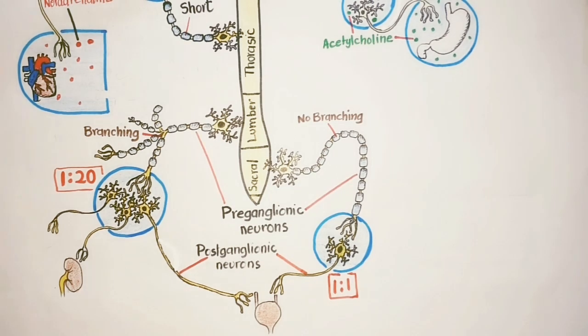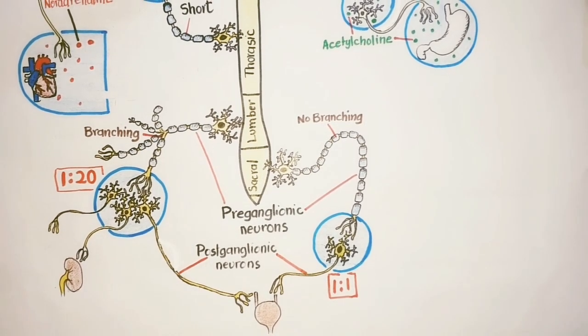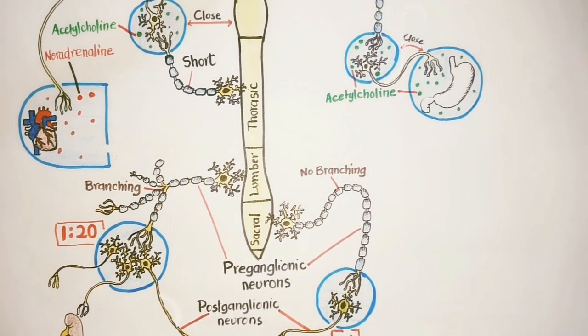In addition to it, the sympathetic system is distributed to effectors throughout the body, innervating practically all effector systems in the body, whereas the parasympathetic distribution is much more limited.